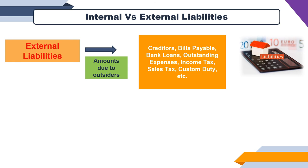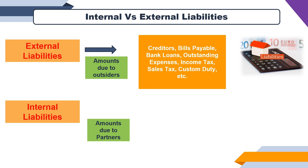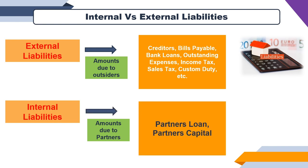Whatever liability we pay to outsiders is considered an external liability. Internal liabilities are simply amounts due to the partners — for example, if a partner has given a loan to the firm, that is a partner's loan and is an internal liability. Partner's capital is also an internal liability. This is the simple bifurcation between external and internal liabilities.